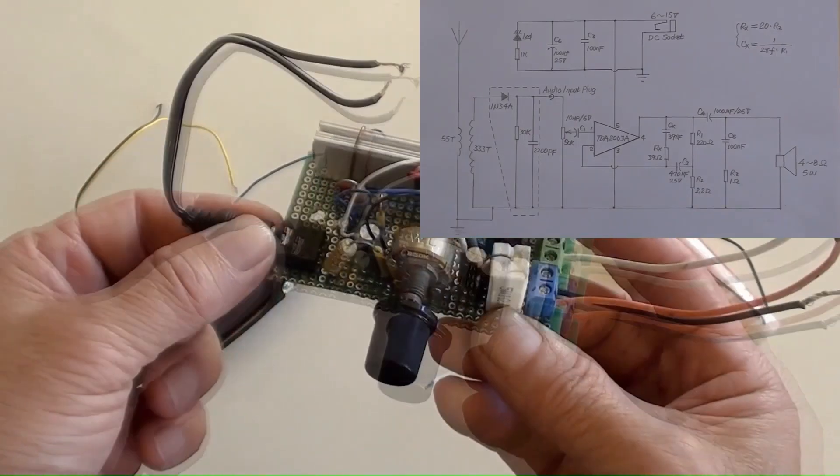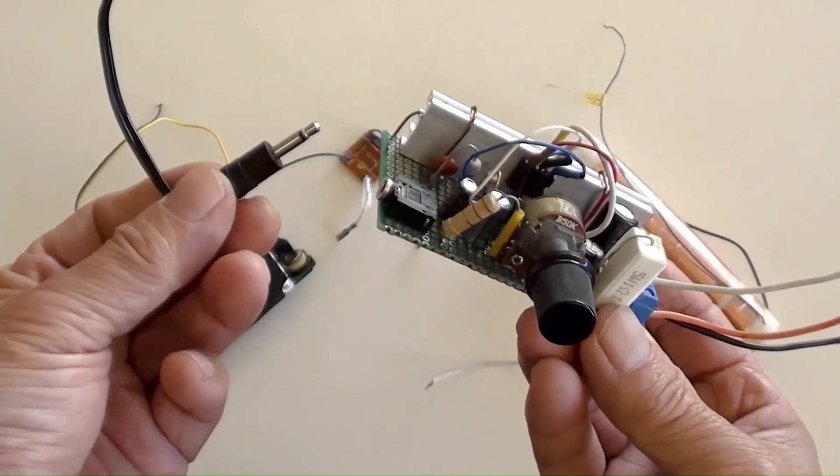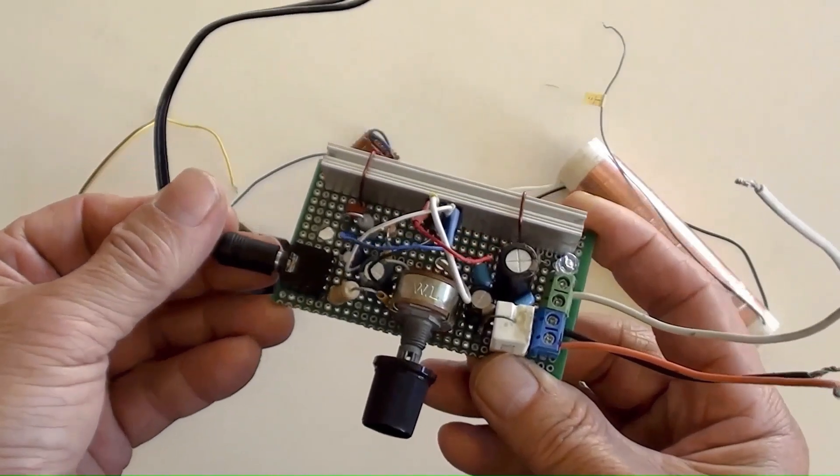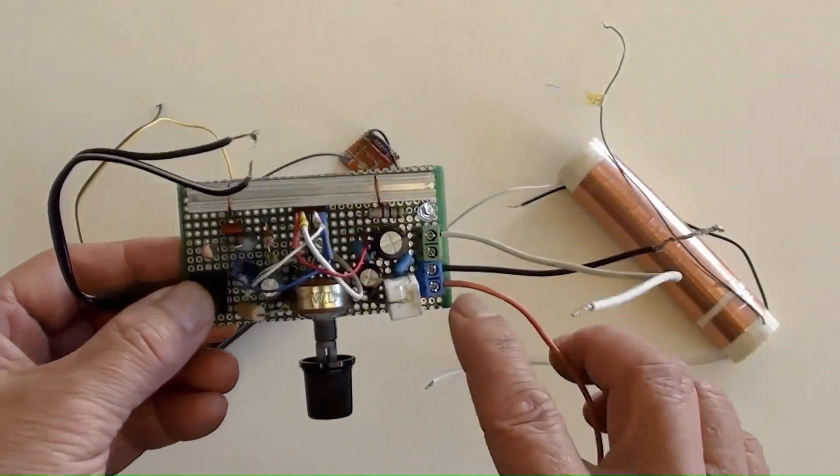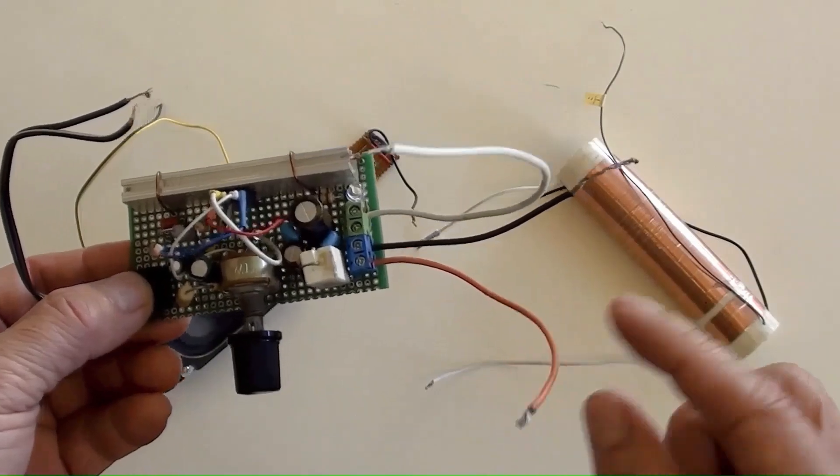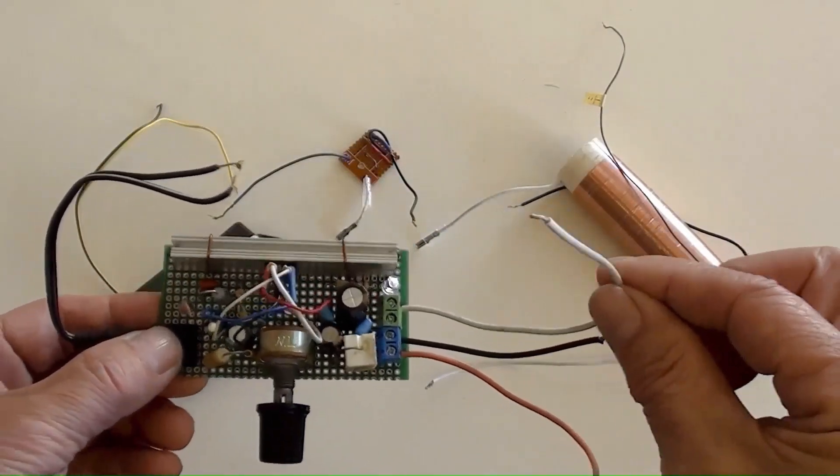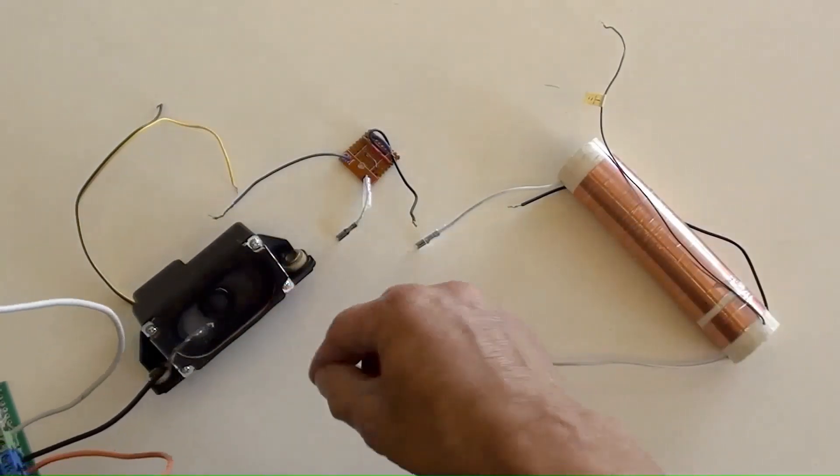That is the signal input jack. DC positive is the wire in orange color, negative or the earth ground is the wire in black color, and white wire is for the speaker.